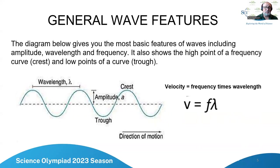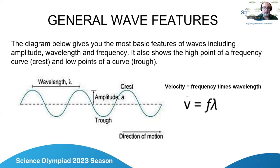We see the velocity equation where velocity equals frequency times wavelength. This should be displayed prominently in your binder. You should also solve for frequency — frequency equals velocity divided by wavelength — and wavelength equals velocity divided by frequency. A good tip: always put your units in when doing calculations and verify they cancel out to the expected units. If you get the units you're not expecting, you know you're wrong.